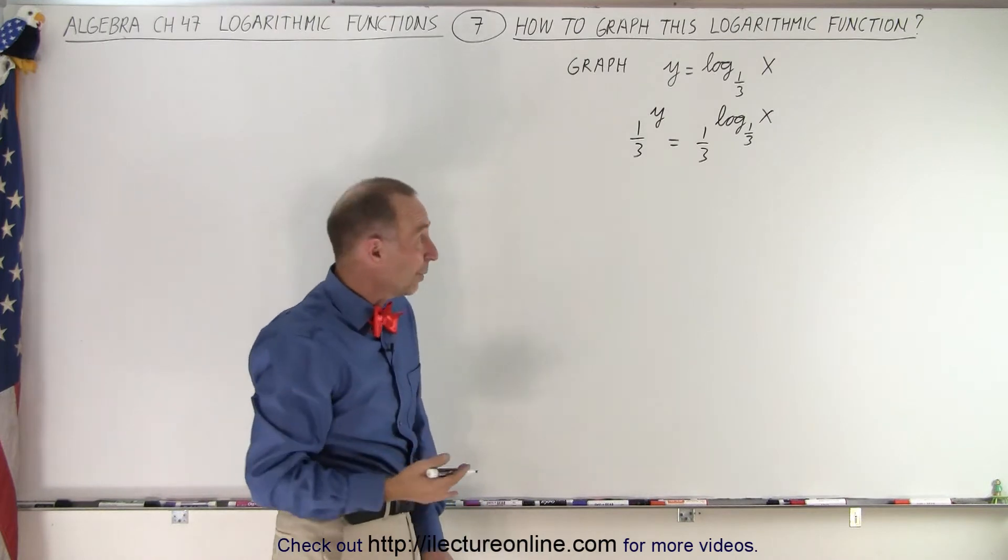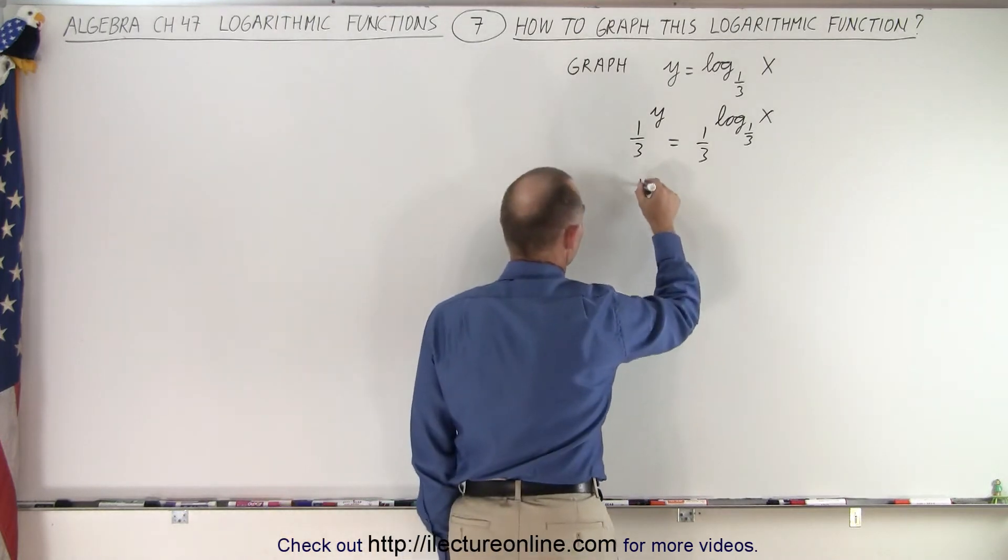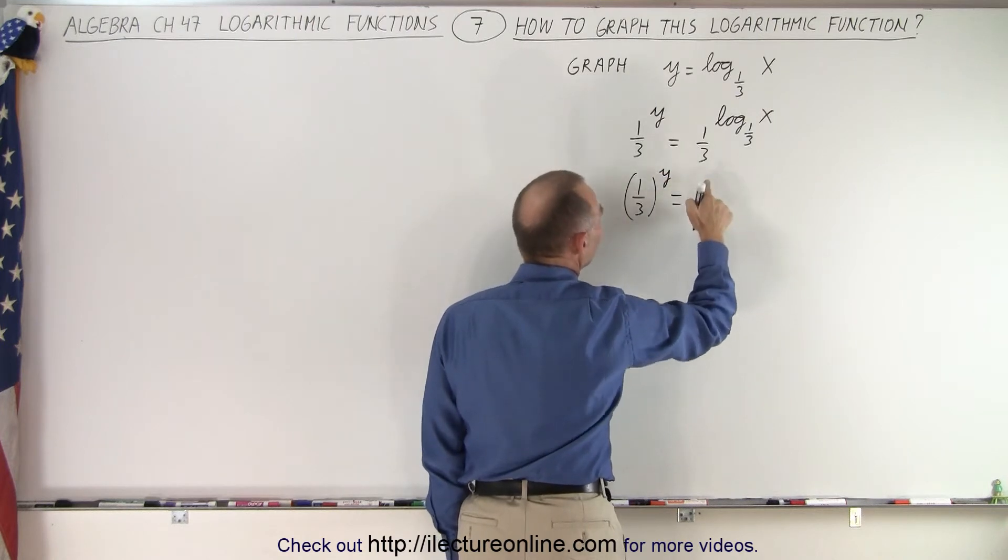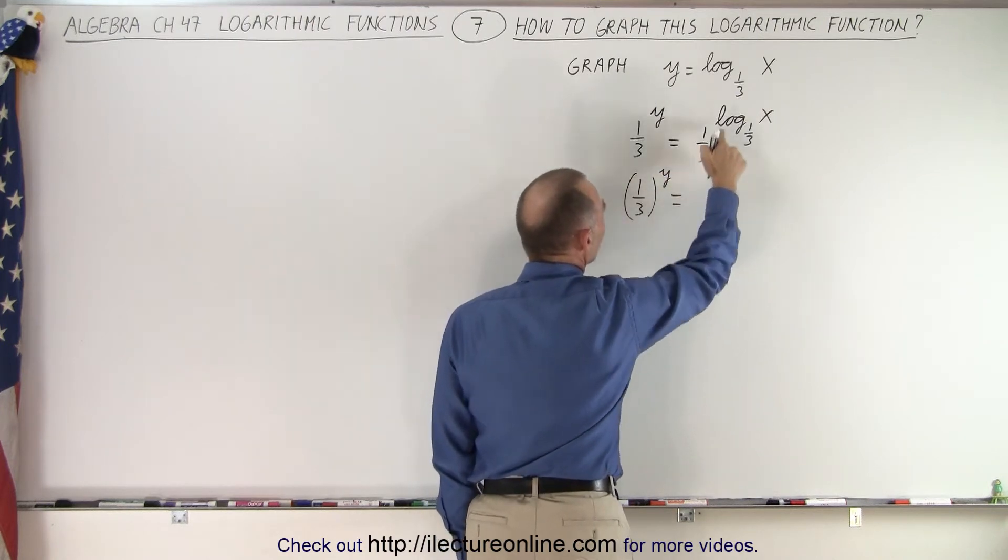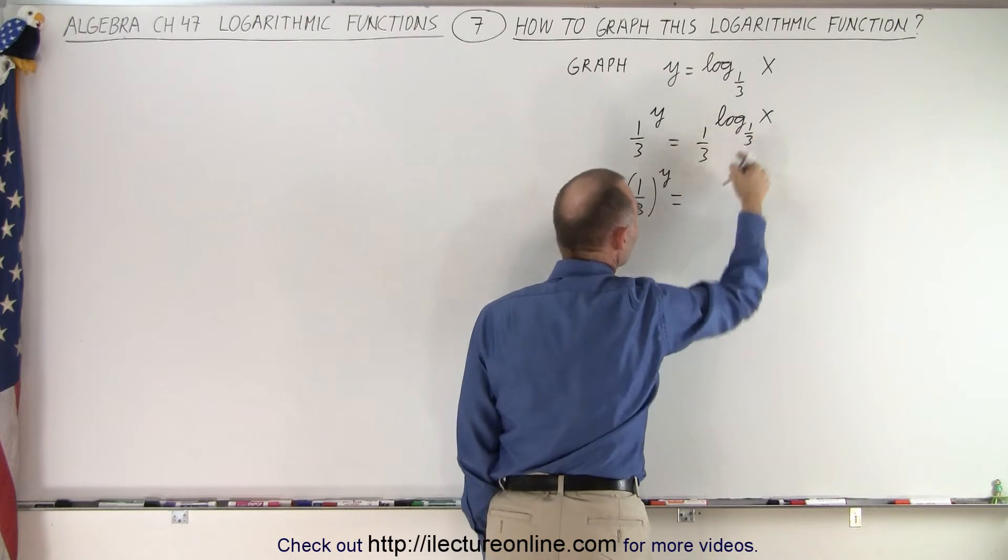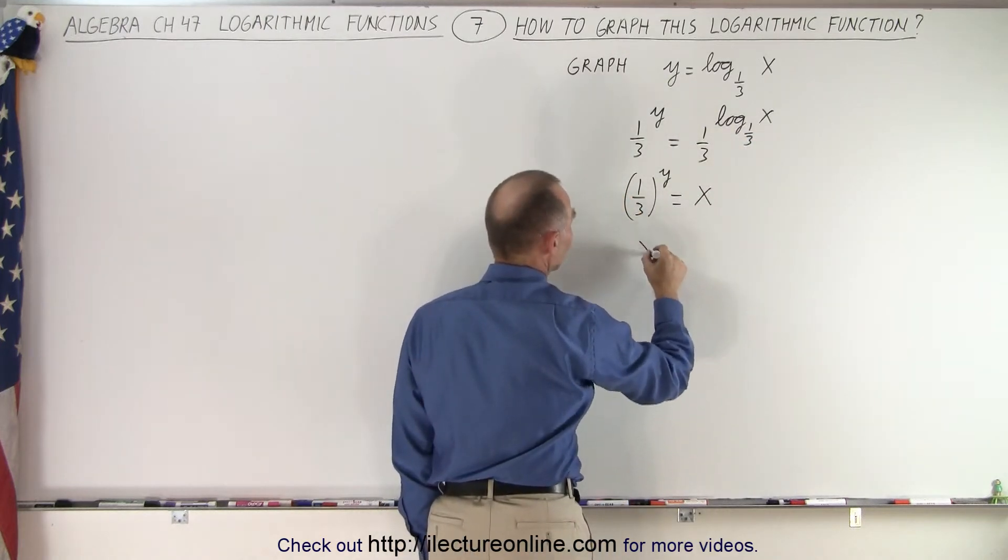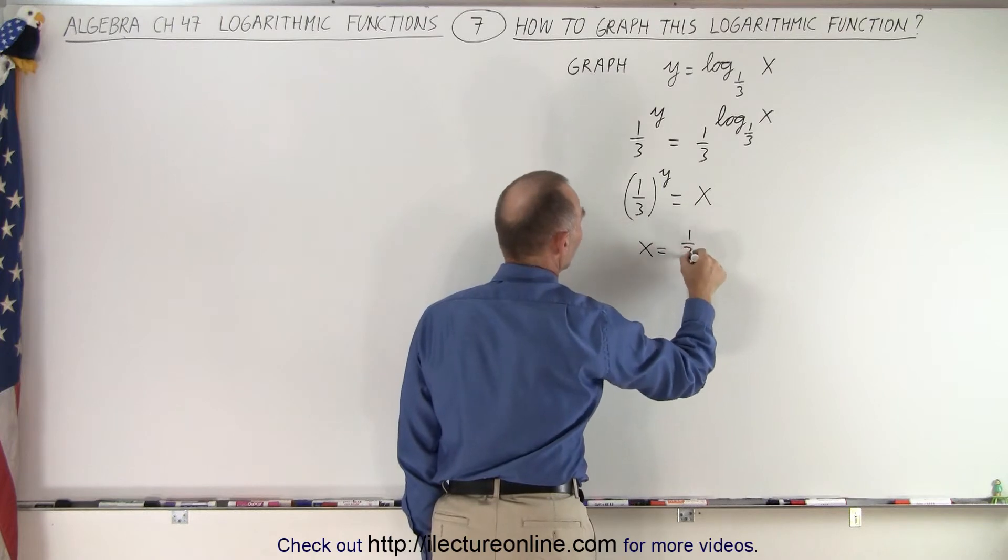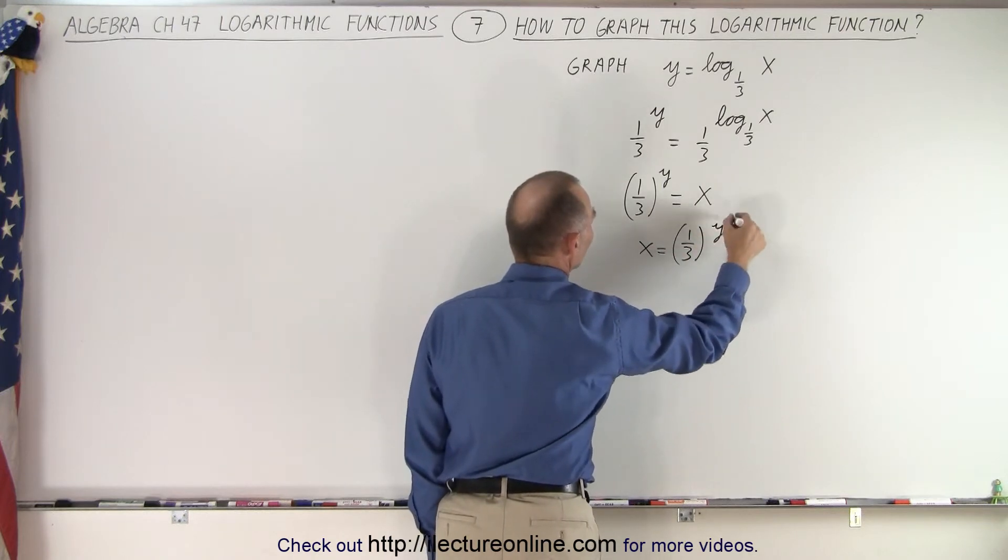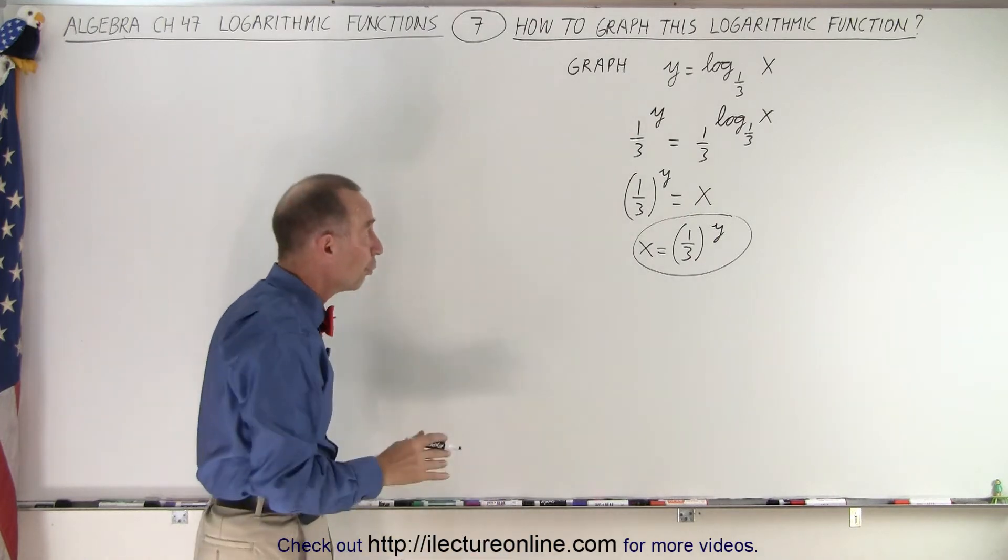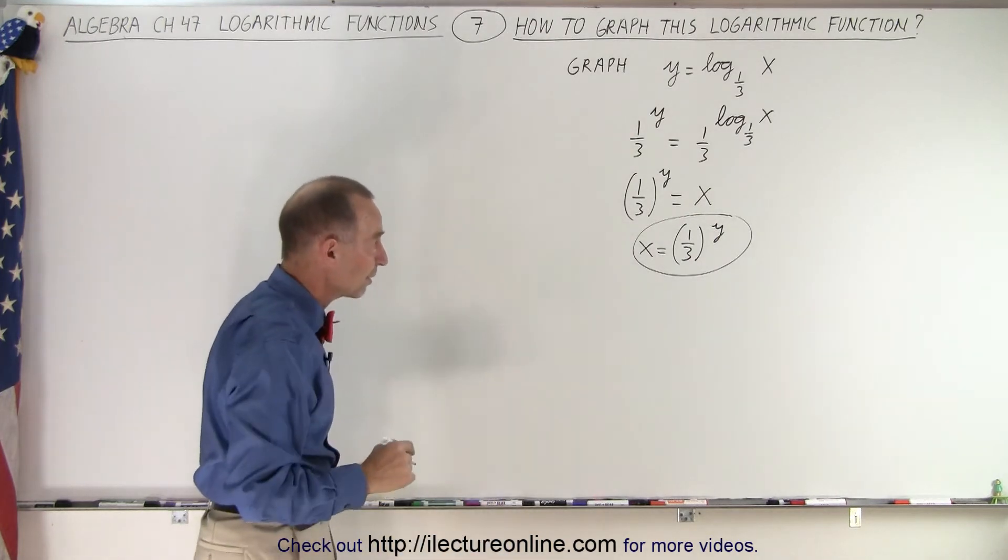On the left side, we have 1/3 to the y power. But on the right side, if you raise the base to the log of the same base of x, you simply get x again. And then if you turn the equation around, you can write x is equal to 1/3 raised to the y power. There's the exponential form of the original logarithmic function.